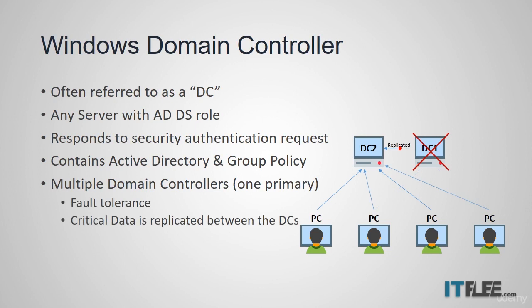The critical information, like user and account information, is replicated between the DCs, so if one goes down the client computers will switch to the other DC that is still functioning.